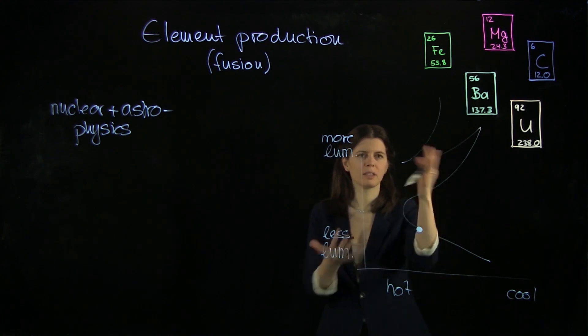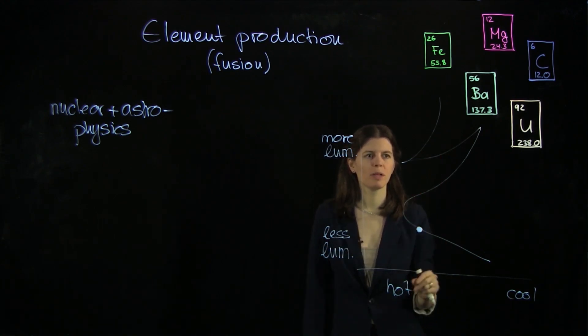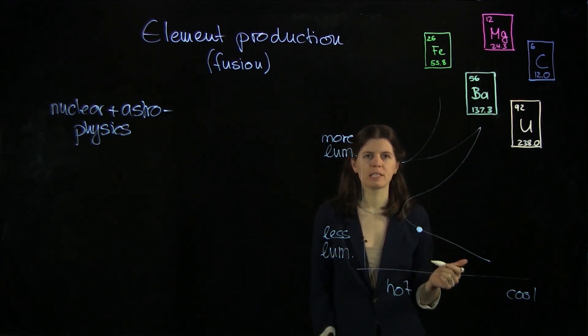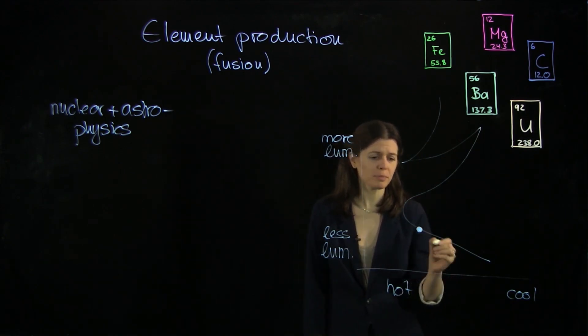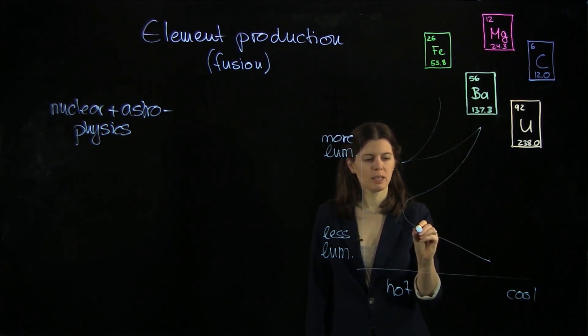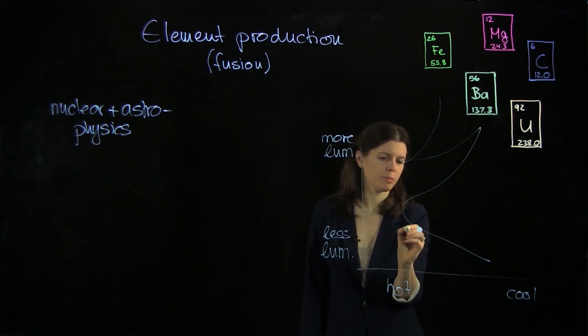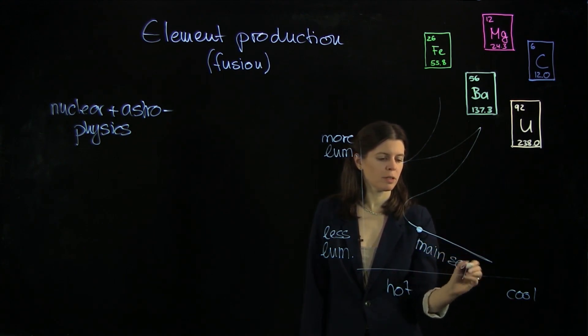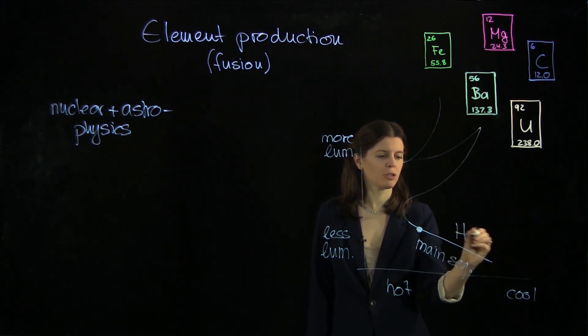One can put any star in this diagram and you will see in a moment how we can then learn about the evolutionary phase of the star and hence what's going on inside of its core. So the Sun is sitting here and we know on this branch here, which we call the main sequence, that stars burn hydrogen to helium.